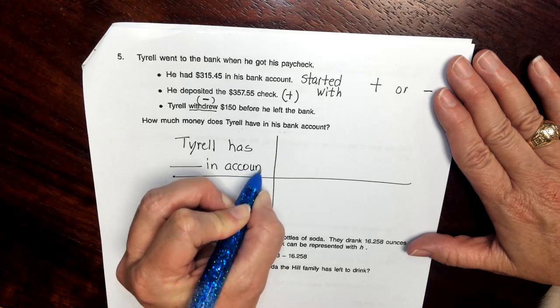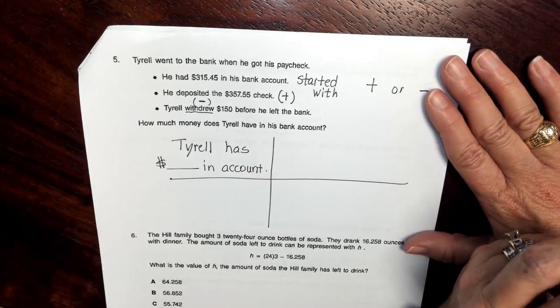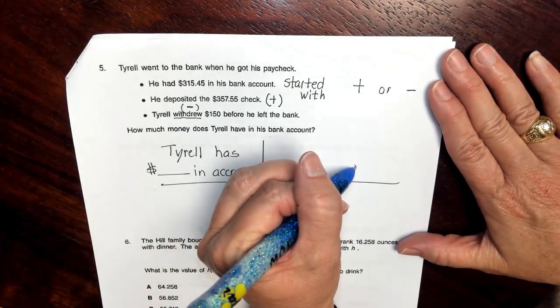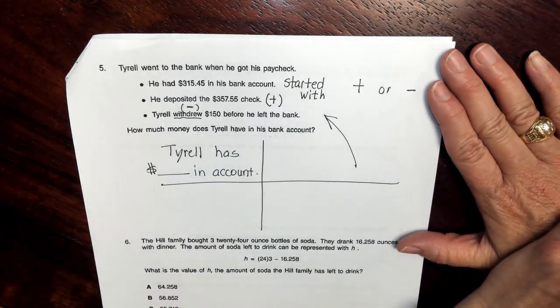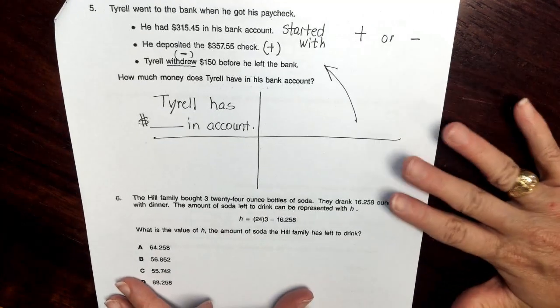And again, we're talking about money. So I'm going to go ahead and put a dollar sign here. And we just went through all of our details up here. So I'm just going to draw an arrow and I'm going to think about this problem.